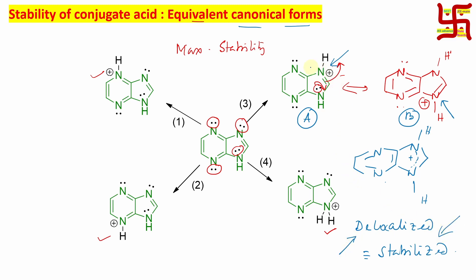So protonation on these nitrogens is associated with maximum stability, and protonation will happen here. Now you might say that such a canonical form is also possible — where this lone pair can donate, open, and result in a canonical form where the positive charge on this nitrogen would be neutralized.